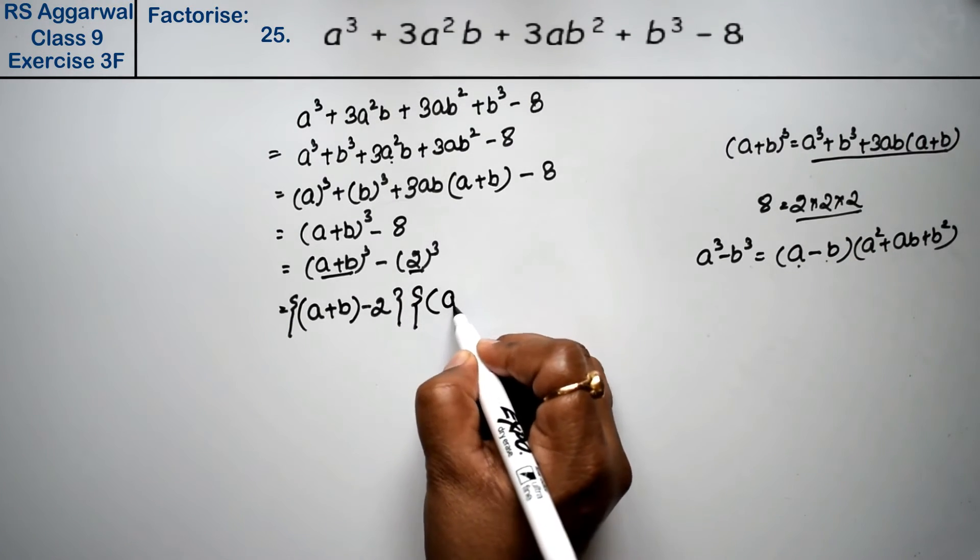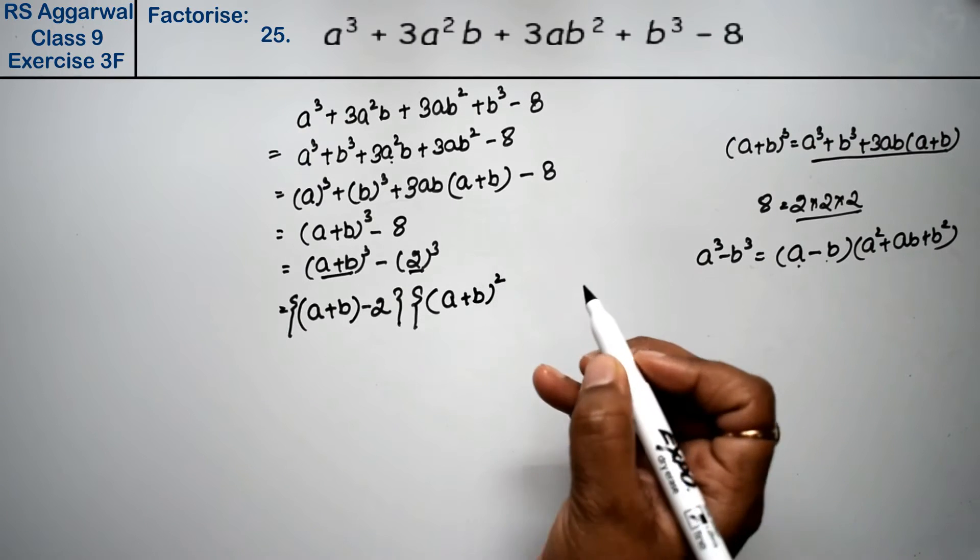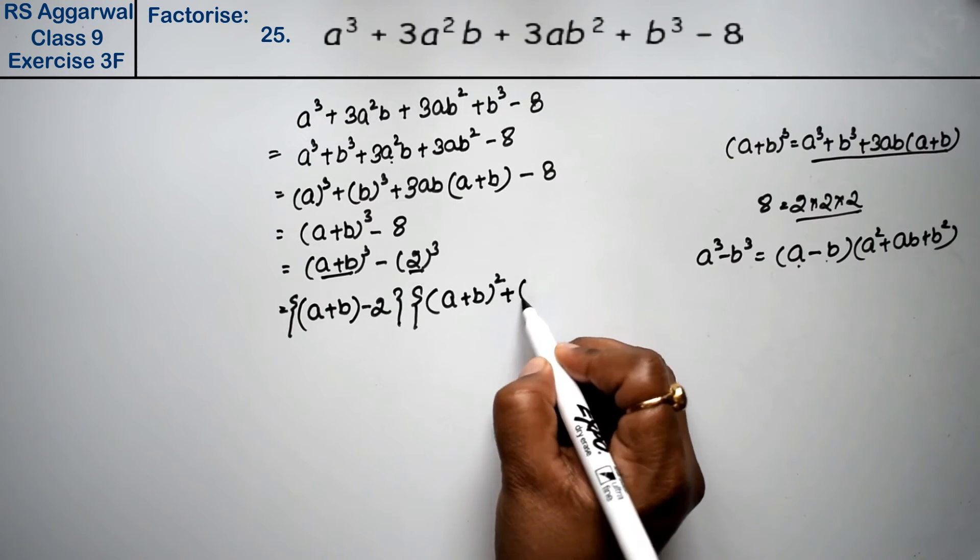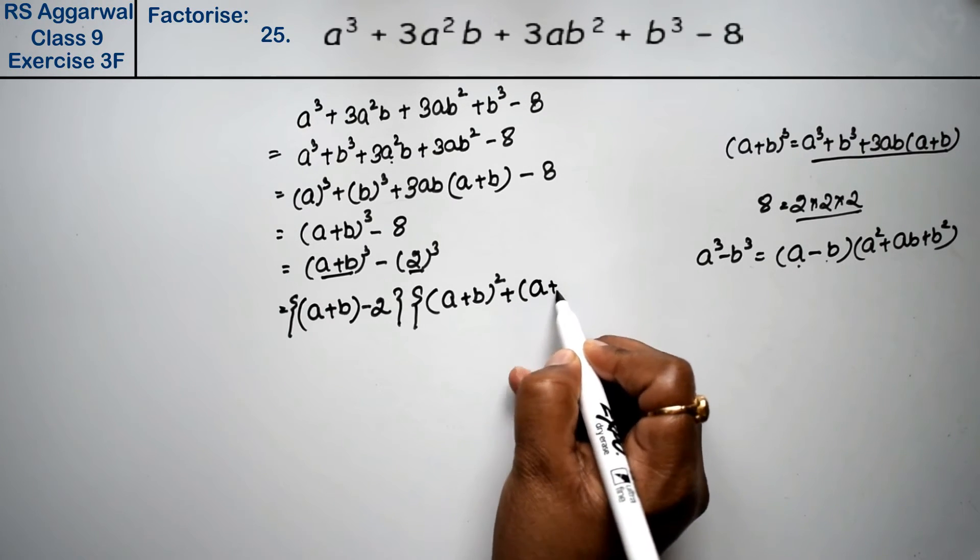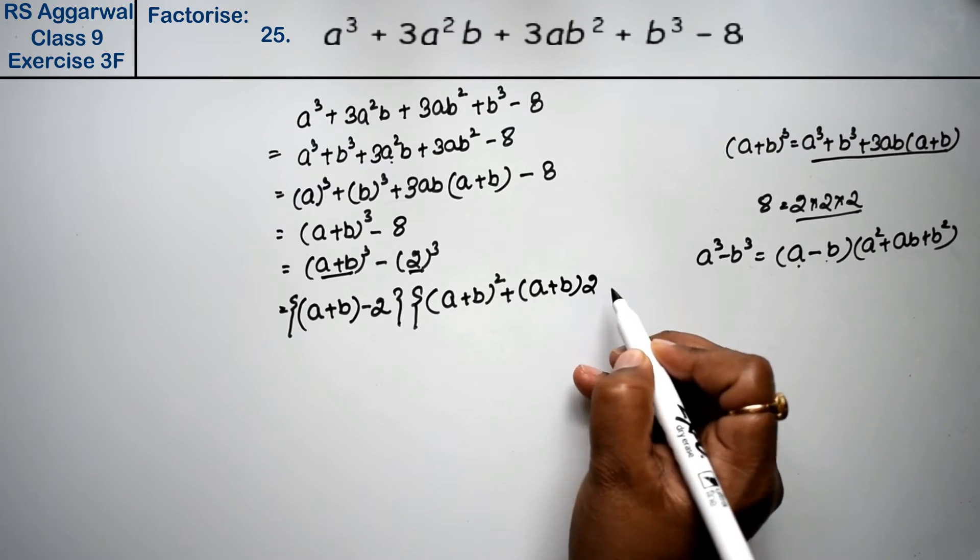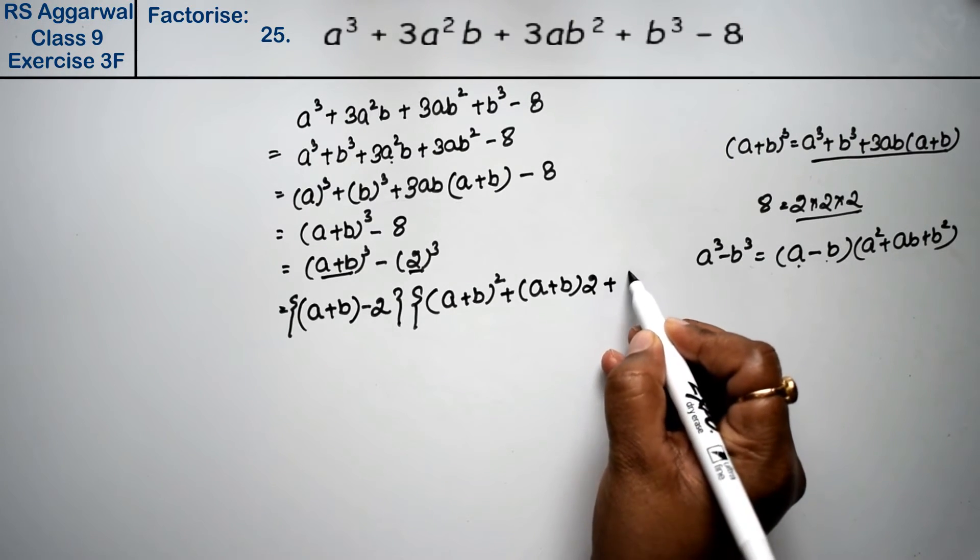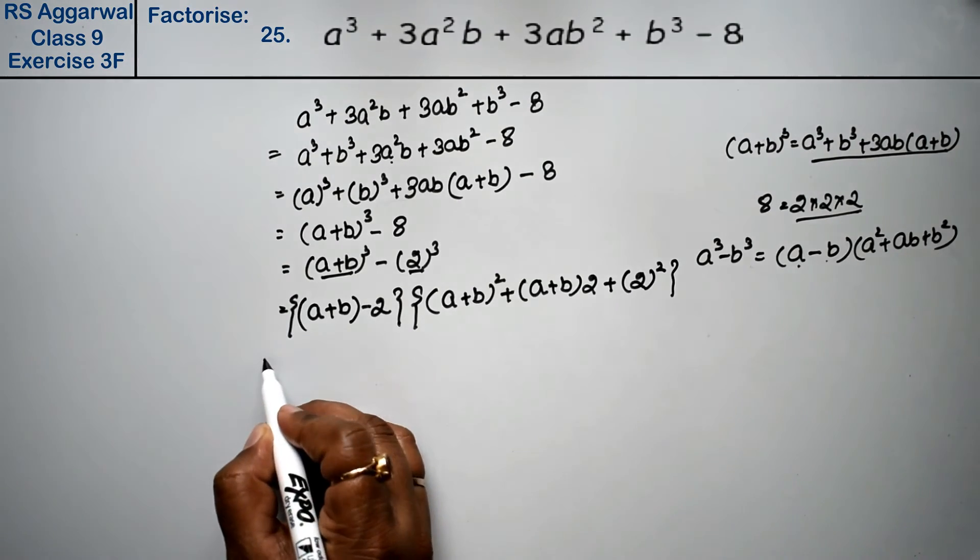A square, that means a plus b whole square, plus ab, that means a plus b into 2, plus b square which is 4.